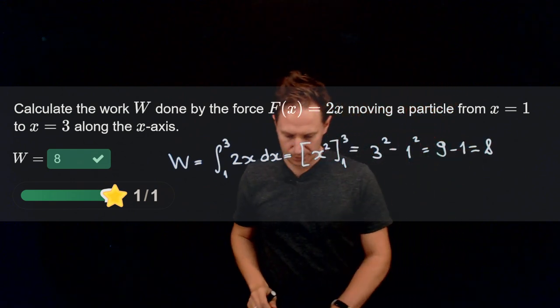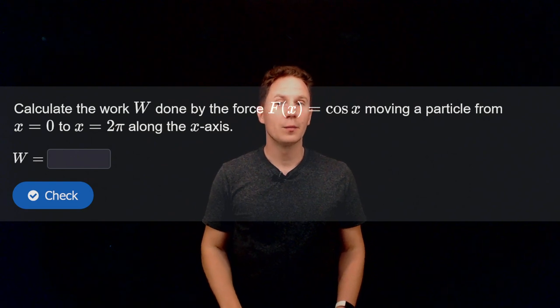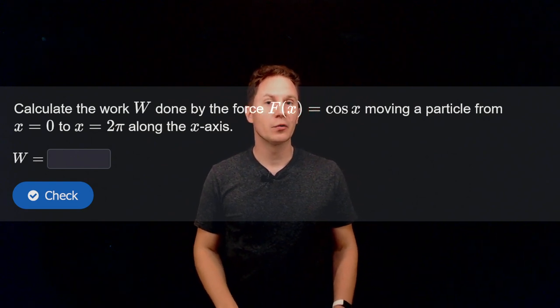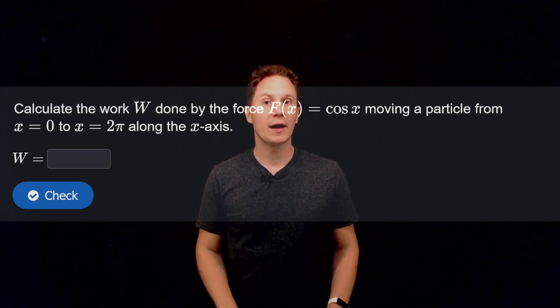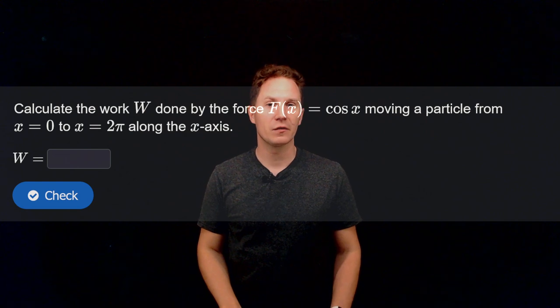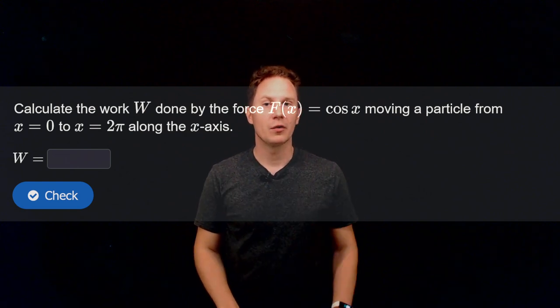Let's look at the next question. Calculate the work w done by the force f of x equals the cosine of x as it moves a particle from x equals 0 to x equals 2 pi along the x-axis. Pause the video and then put your answer in the box.